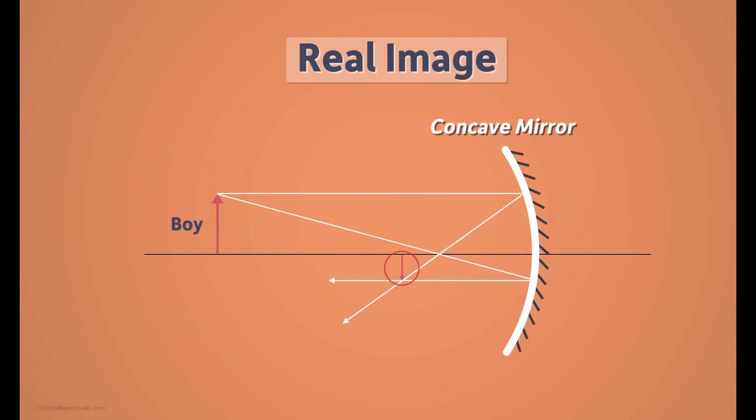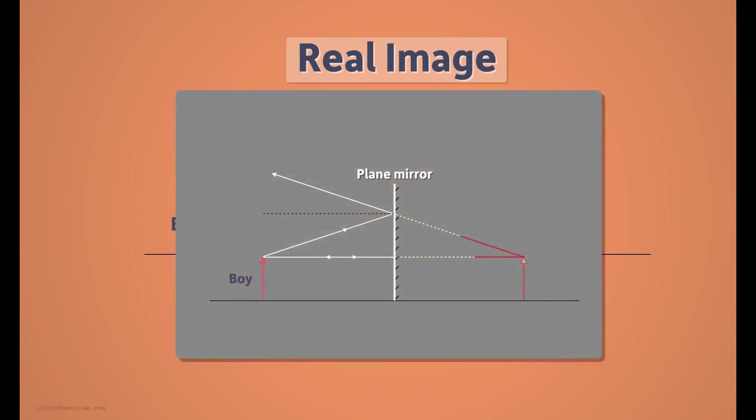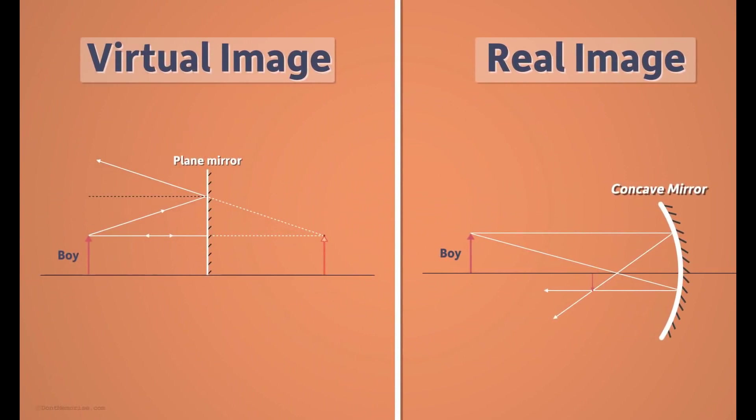When we look at the real image formed by a concave mirror, it also seems to us that the light rays are diverging. But here the rays actually are diverging from a point in front of a mirror. Whereas in the case of a plane mirror, it appears to us that the rays were diverging from the point behind the mirror. So did you understand the difference between a virtual image and a real image?